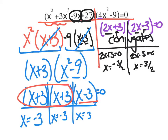So I could have at most five solutions, since x³ times x² would give x to the fifth. In the end, you'll notice some of these terms actually repeat themselves, so I have four distinct values.